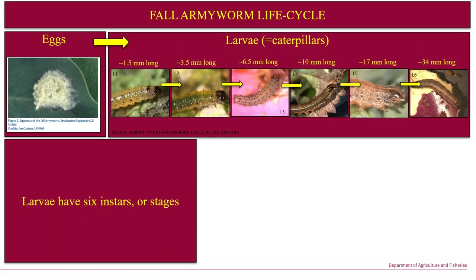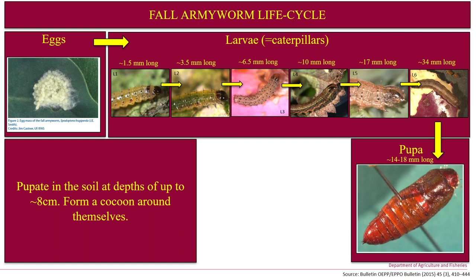Larvae occur as six instars or stages — L1, L2, L3, L4, L5, and L6 — with approximate sizes illustrated. Bear in mind those sizes are contingent on how much food they've eaten, so they can vary. They go through to the pupal stage, which is about 14 to 18 millimeters in length, forming inside a cocoon structure. They can be found underground up to about 8 centimeters depth.